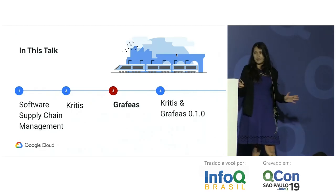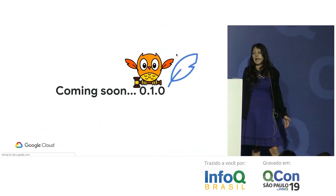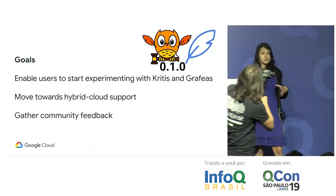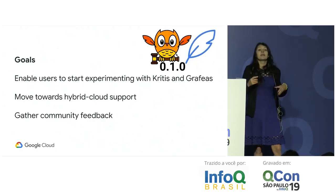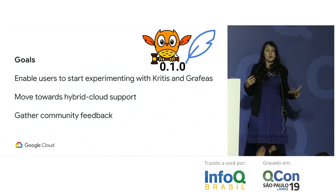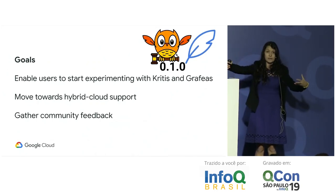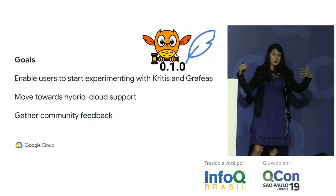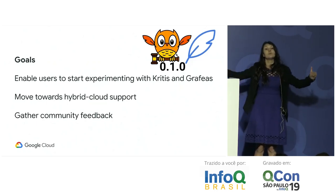Now let's talk about the upcoming release 0.1.0, which I'm very excited about. It's coming in Q2 with three goals: enable users to experiment with Kritis and Grafeas on their laptop or on-premises; gather community feedback to move towards hybrid cloud solutions; and prioritize features based on community input so it continues to be most useful for the industry.